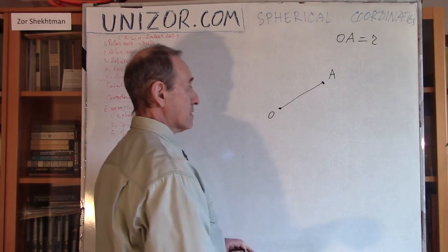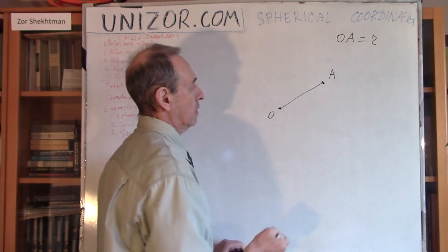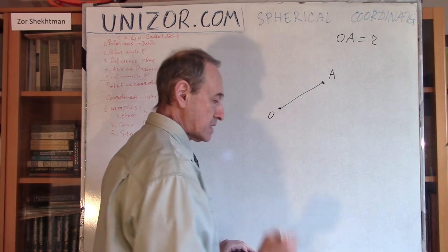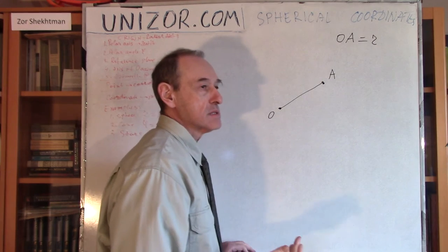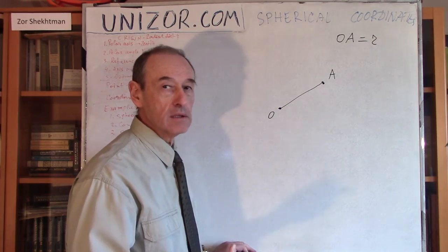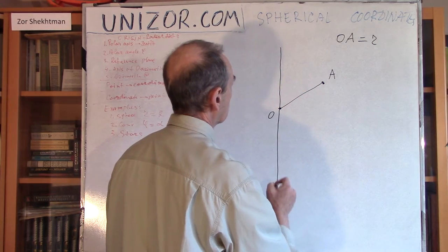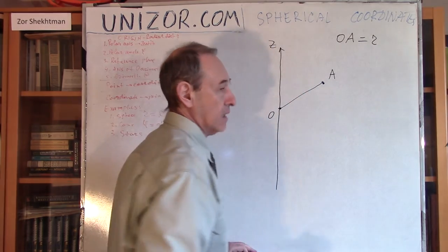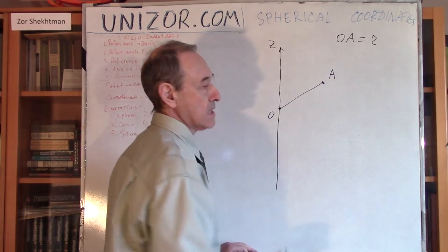Obviously, R alone does not identify the point, because anything on the sphere around the origin would have the same characteristic. Next, we need an axis relative to which we will measure the angle of deviation. Usually it's displayed vertically, and you can use the letter Z — as in Cartesian and cylindrical coordinates — to specify this as the Z axis.